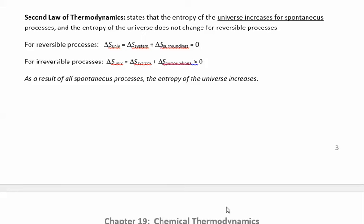The second law of thermodynamics is about entropy, and it says the entropy of the universe is always increasing. It increases for irreversible processes, but the entropy change for a reversible process equals zero. Because of all the irreversible and spontaneous processes that happen, the entropy of the universe is always increasing. This is the second law of thermodynamics.